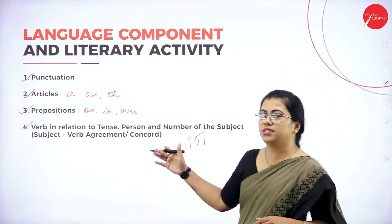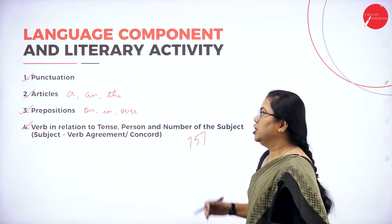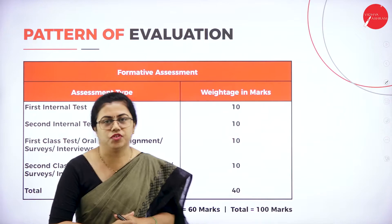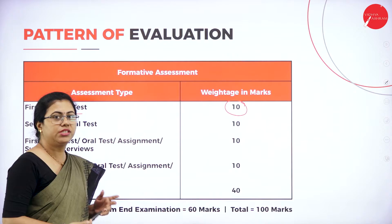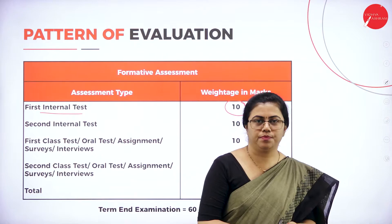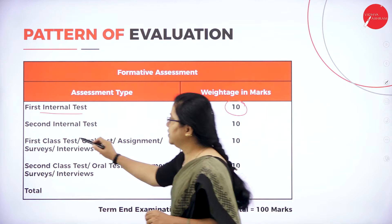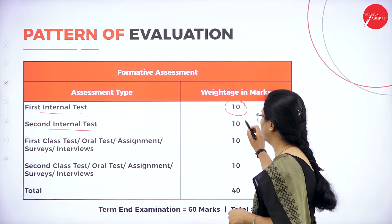Now we have to understand the pattern of evaluation — how your marks are divided. You will have internals first. The first internal test is for 10 marks, and here you will be given questions about prose or poetry depending on the teacher — it's a written assessment held like a class test. The second internal test is purely about the language component part, and that is also for 10 marks.